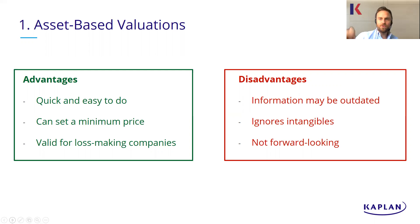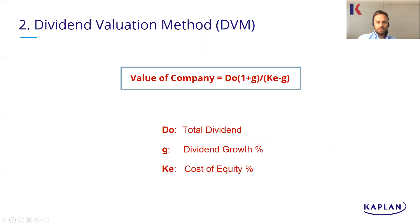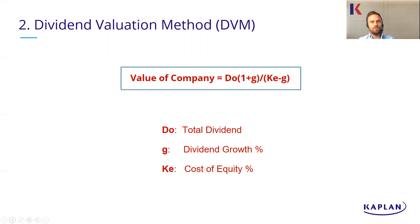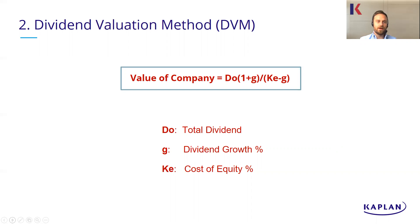So it's a nice starting point — really quick and easy to do — but overall it's not going to give you the most accurate valuation of the business. Our second method is the dividend valuation model. This one uses a company's dividends to predict what the business is worth. There is a formula: the value of the company equals the dividend times one plus the growth rate, divided by the cost of equity minus growth. That will give you the value of a company.